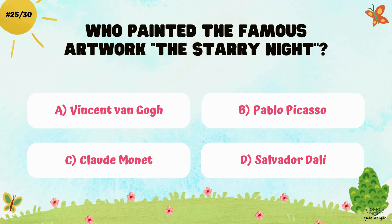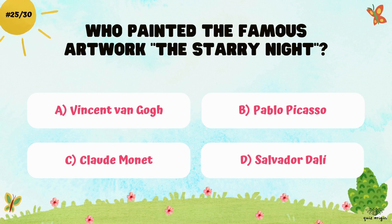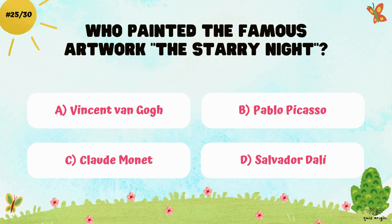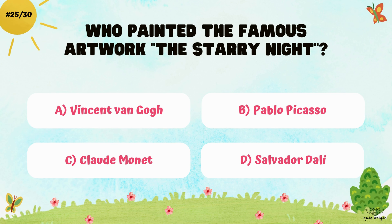Who painted the famous artwork, The Starry Night? A. Vincent van Gogh, B. Pablo Picasso, C. Claude Monet, and D. Salvador Dali.